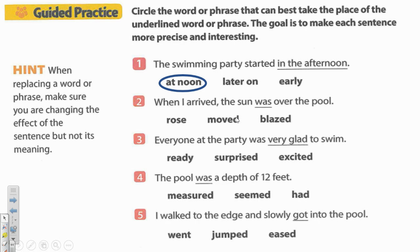Number two: 'When I arrived, the sun was over the pool.' 'Was' is a pretty boring past tense verb. What's a better verb? 'The sun rose over the pool,' 'moved over the pool,' or 'blazed over the pool.' I picture the sun blazing down. I like 'blazed' there.